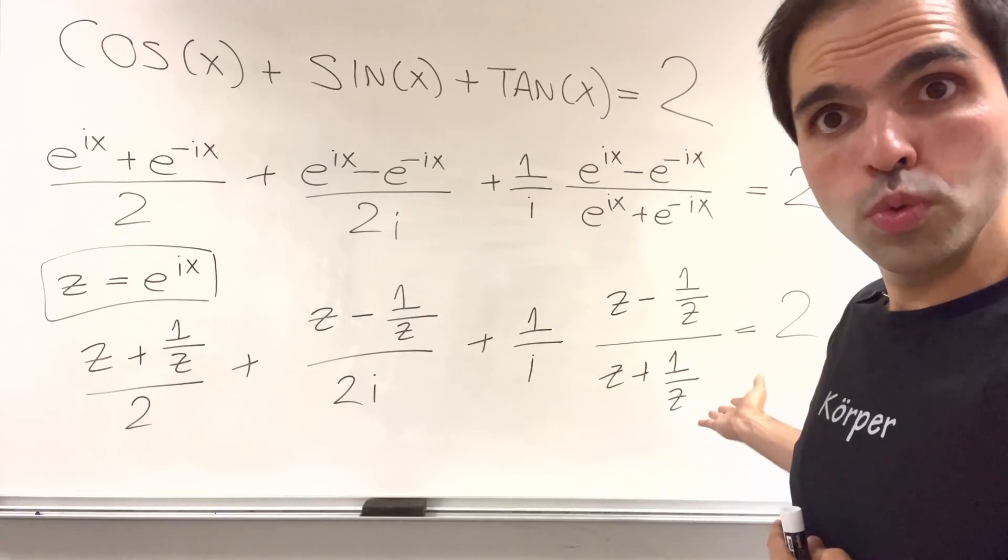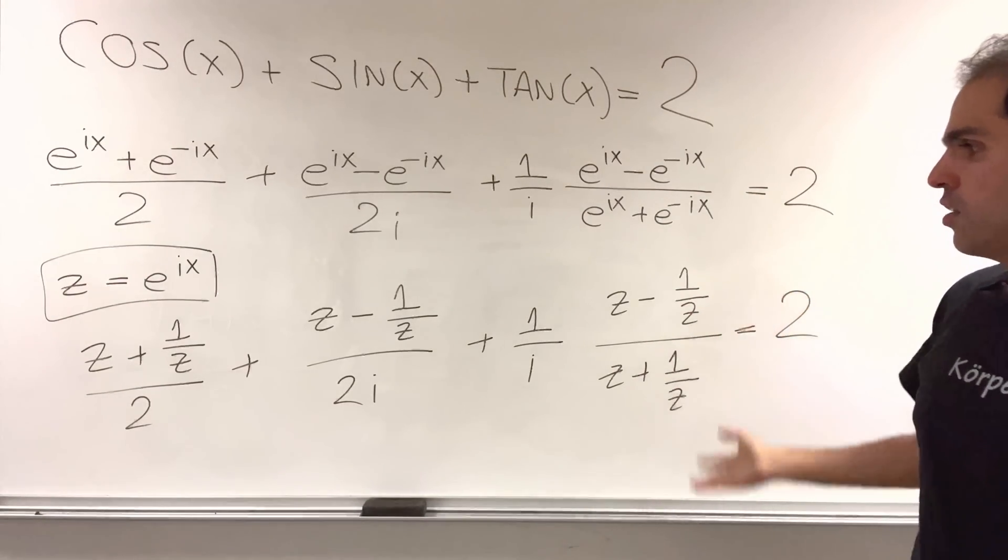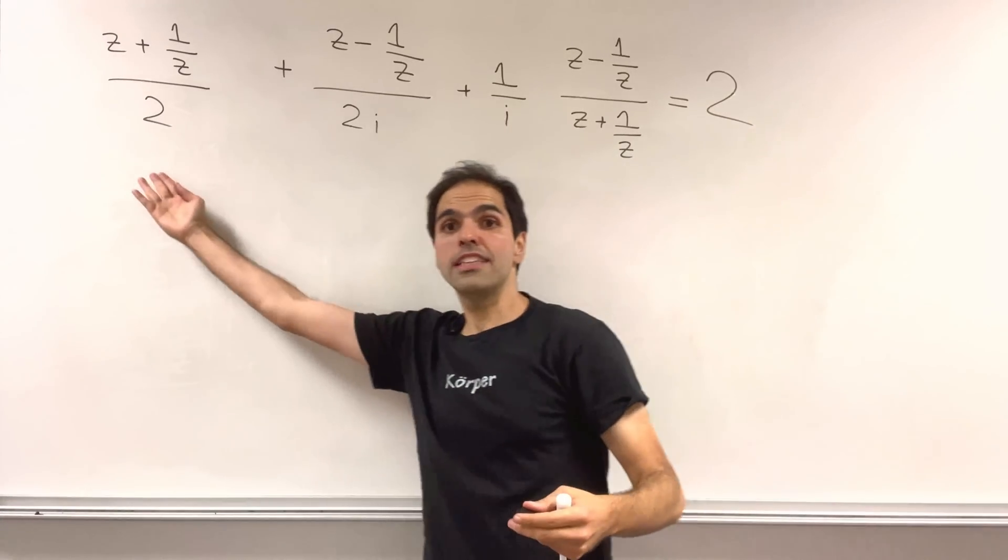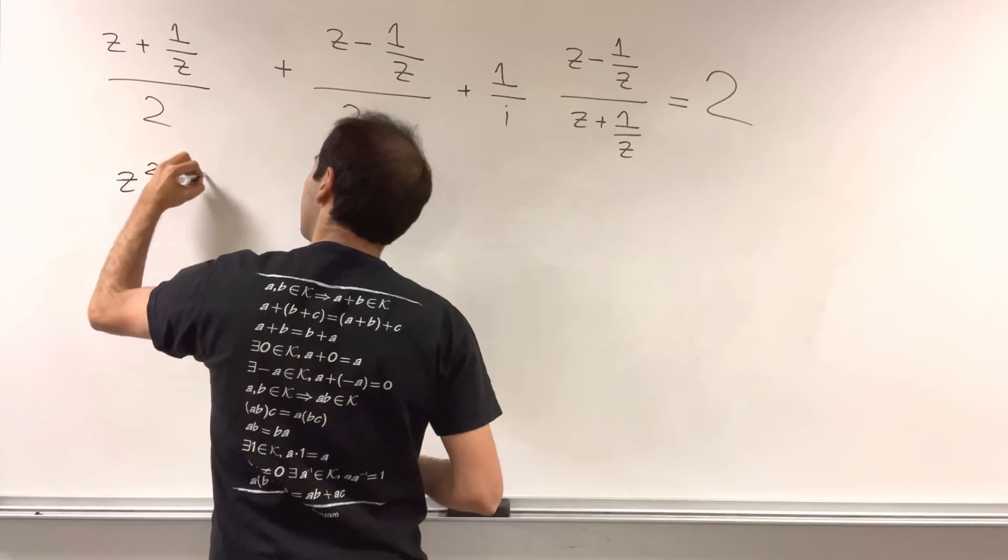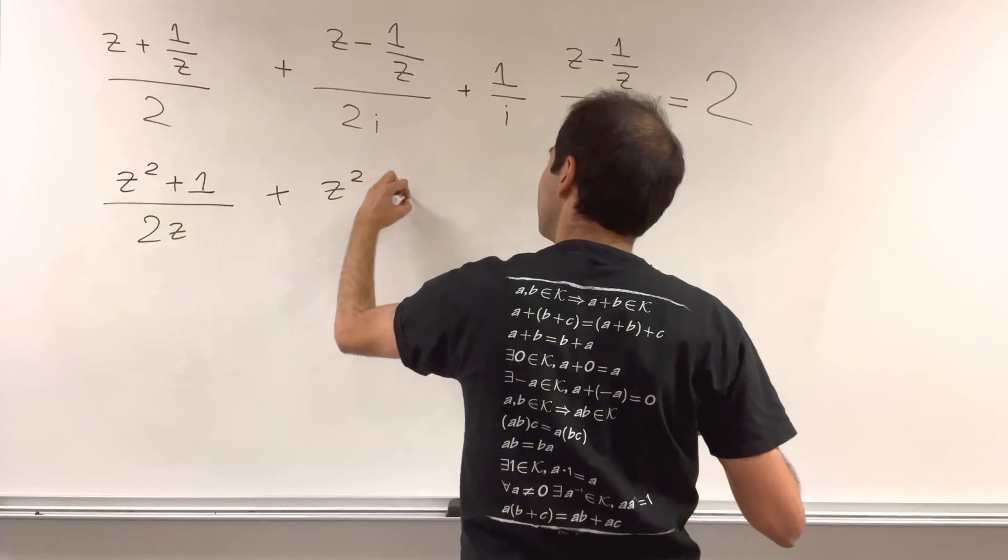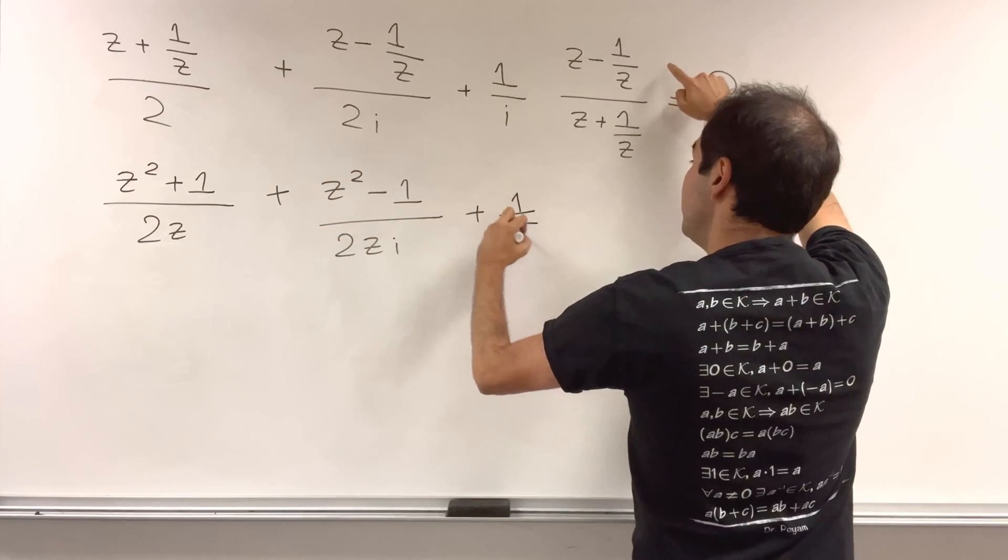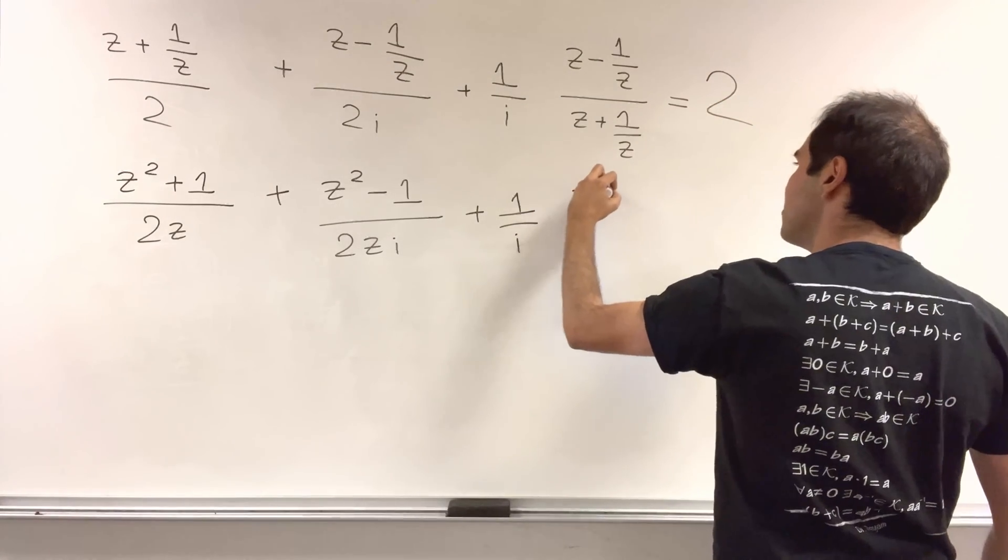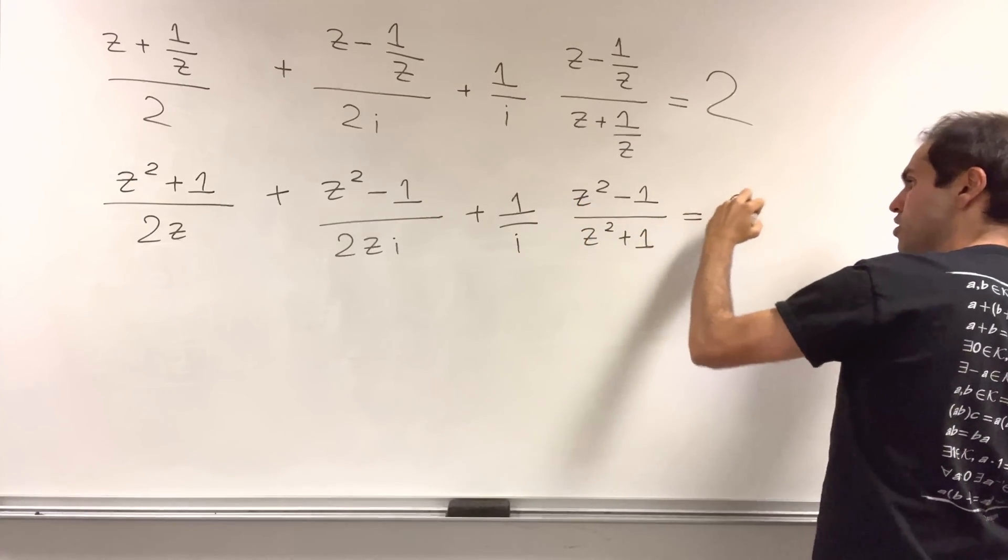What we would like to do now is just clean up this formula a little bit, multiply top and bottom by z, and then write this as a polynomial. So let's put this on a common denominator, and you get z squared plus one over two z. And then here, same thing, z squared minus one over two zi. And here, even easier, just multiply top and bottom by z, and you get z squared minus one over z squared plus one. And that equals two.